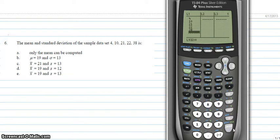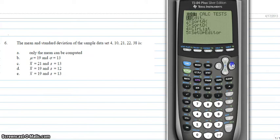Now that we have our data entered in, we need to go back up and hit stat, arrow over to calc. We will be using one-variable stats to find the mean and the standard deviation.